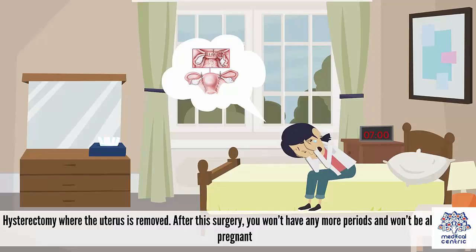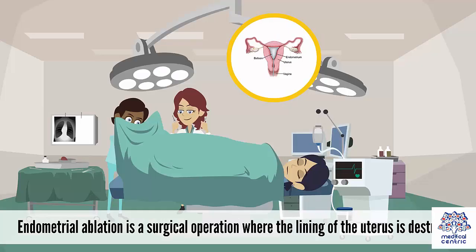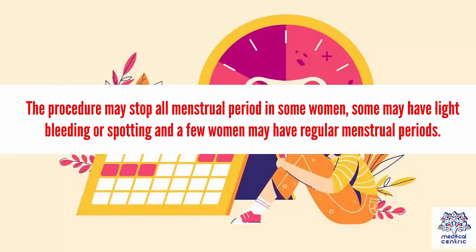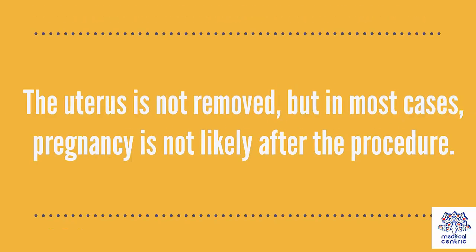Surgery may depend on whether you plan to have children, as some treatments may affect future pregnancies. Options may include hysterectomy, where the uterus is removed — after this surgery you won't have any more periods and won't be able to get pregnant. Endometrial ablation is a surgical operation where the lining of the uterus is destroyed. The procedure may stop all menstrual periods in some women; some may have light bleeding or spotting; and a few women may have regular menstrual periods. The uterus is not removed, but in most cases pregnancy is not likely after the procedure.